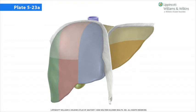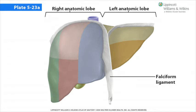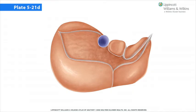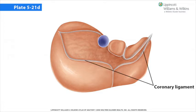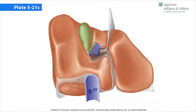The peritoneum covers most of the diaphragmatic surface and forms the falciform ligament that connects the liver to the anterior abdominal wall. The falciform ligament divides the liver into left and right anatomic lobes, as opposed to functional lobes, which are divided according to blood supply. The posterior portion of the liver in contact with the diaphragm is not covered by peritoneum and is called the bare area. The peritoneum at the anterior and posterior margins of the bare area is called the coronary ligament. The anterior and posterior parts of the coronary ligament meet laterally to form the left and right triangular ligaments. The visceral surface of the liver is covered by peritoneum except in the fossa for the gallbladder and at the porta hepatis.